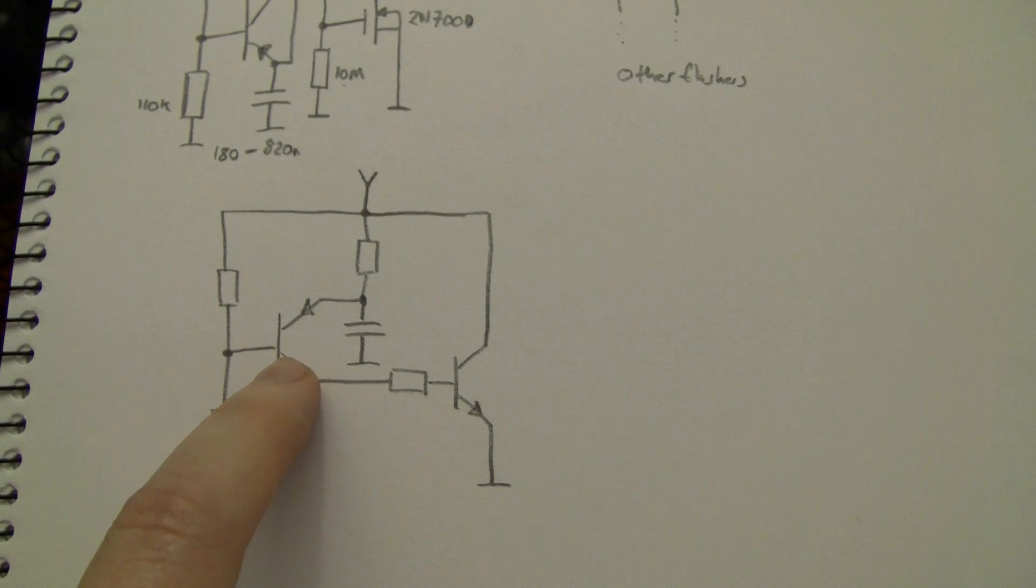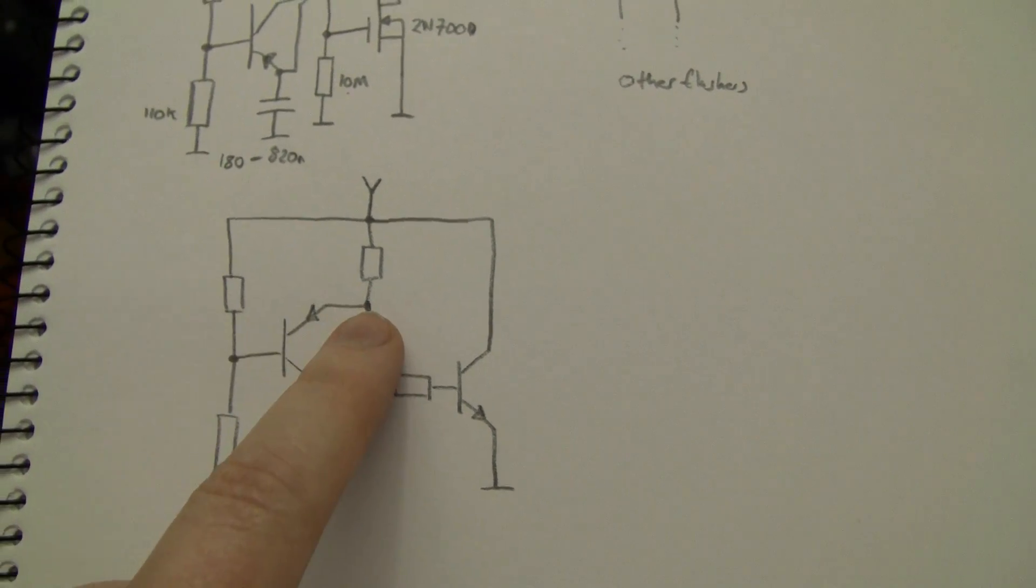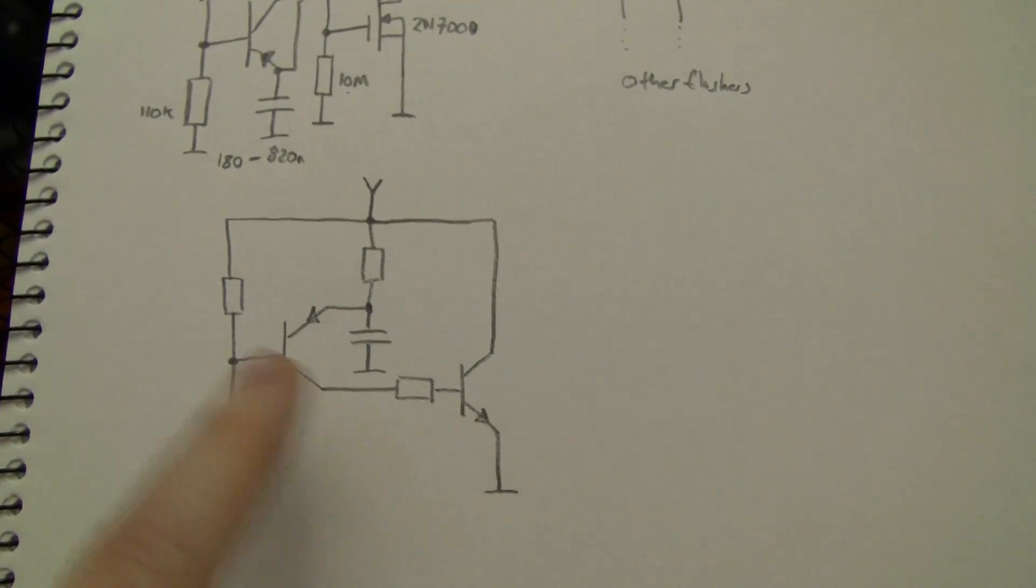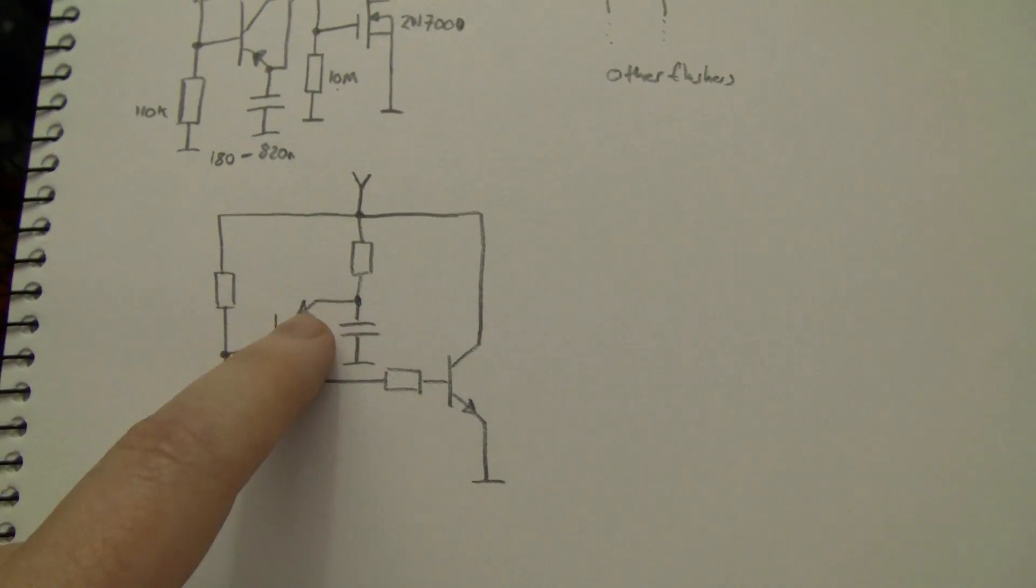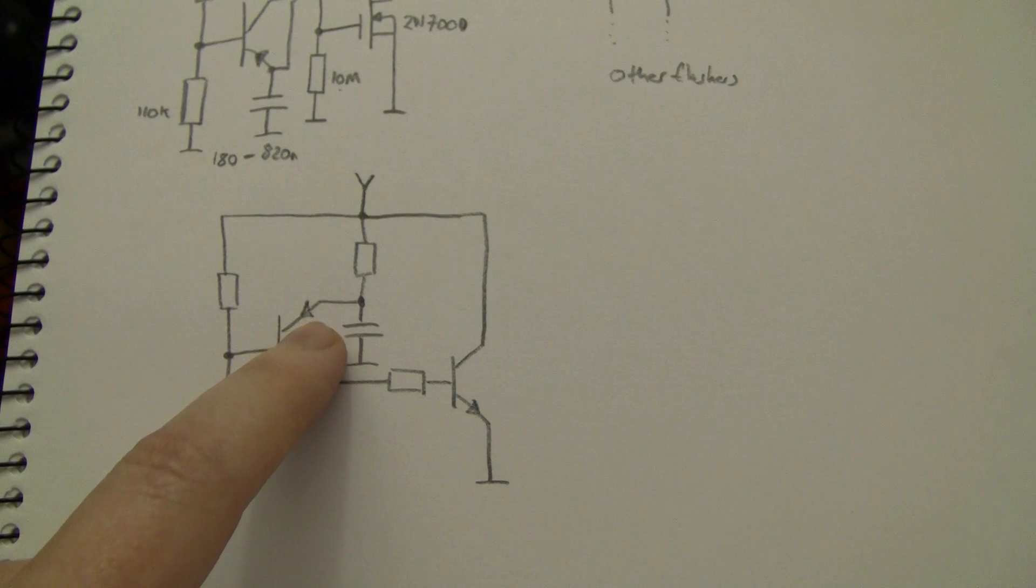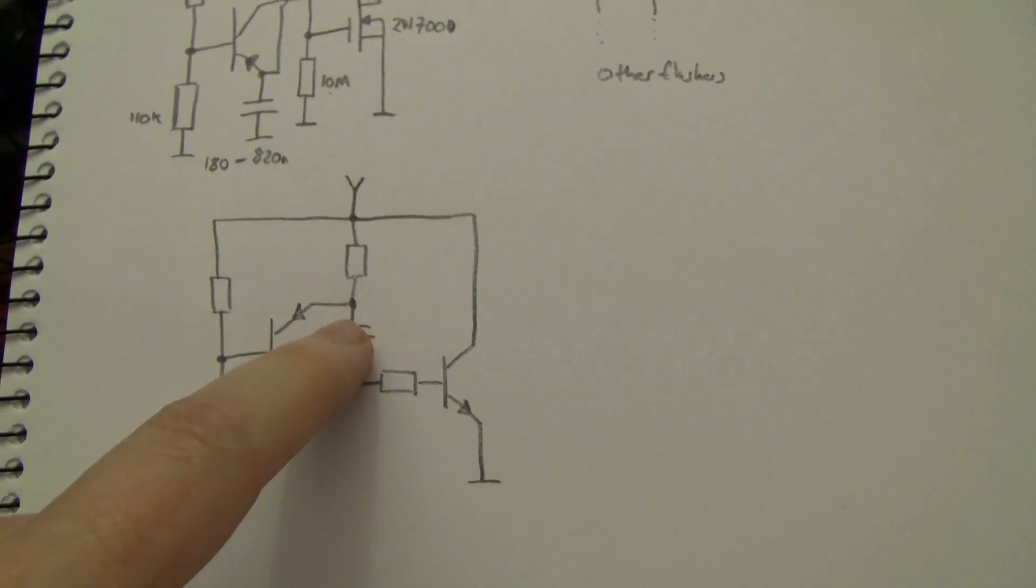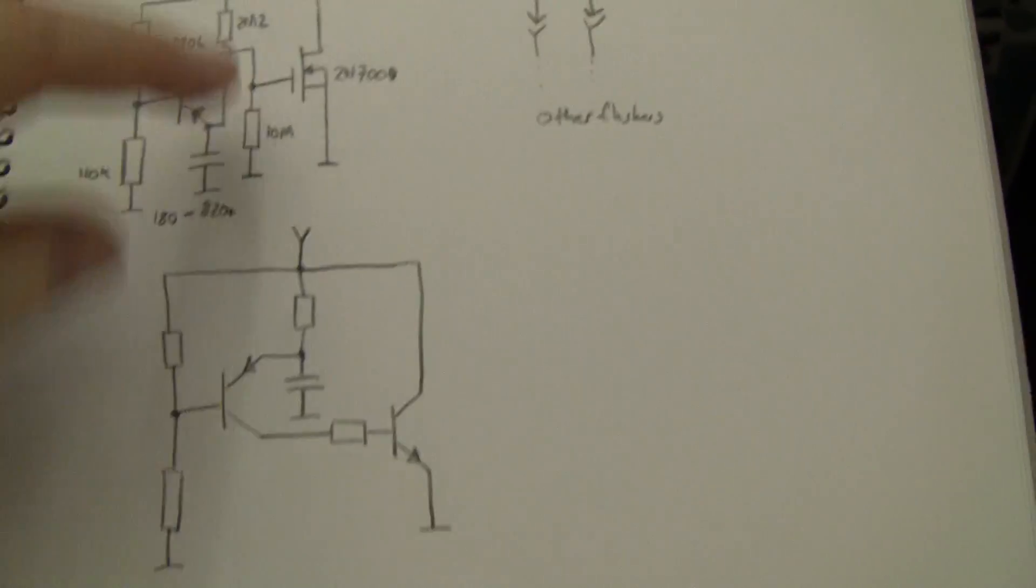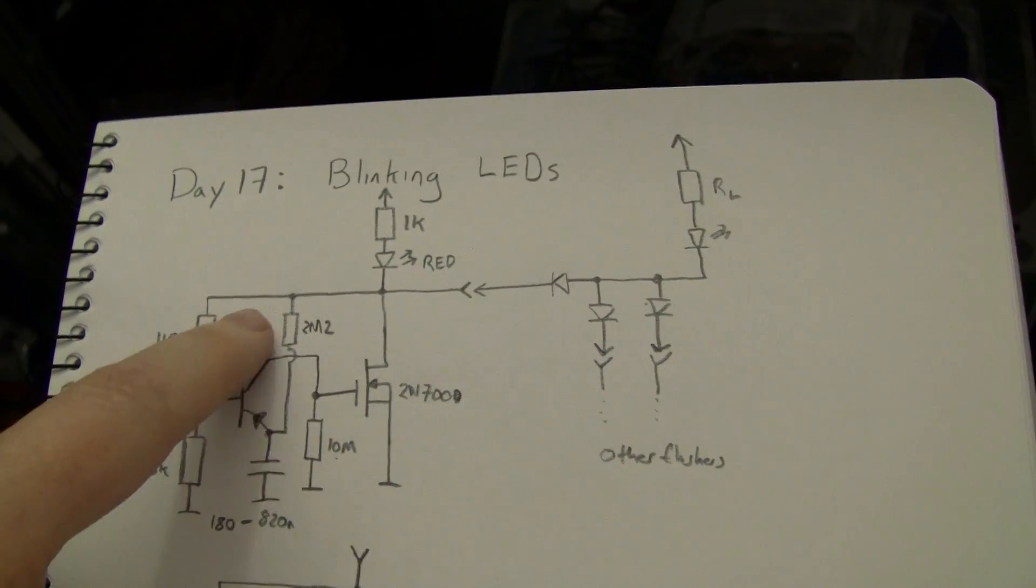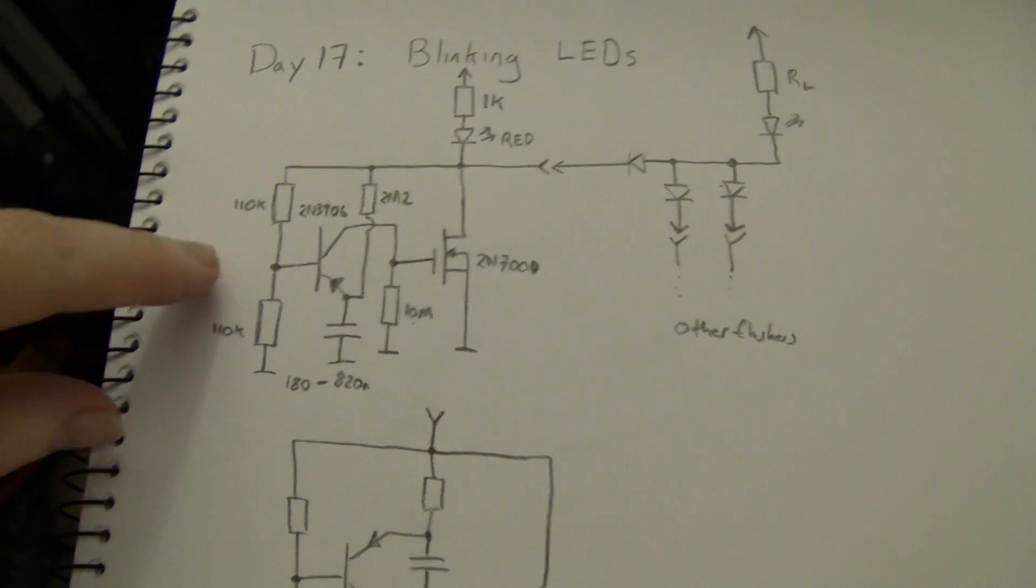The PNP starts with the capacitor discharged. The PNP is cut off because the emitter base junction is reverse biased as the capacitor charges through this resistor. So this is obviously connected to the positive supply as we see up here.